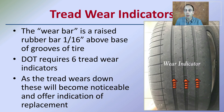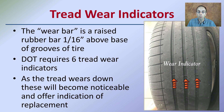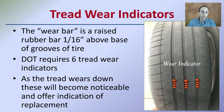We also have tread wear indicators. If you look at this tire, you may not see them initially, but I've highlighted them here with little arrows. They are little wear bars — a rubber bar raised about 1/16th of an inch above the base of the grooves. The DOT requires six tread wear indicators, so because there are only six, you may have to rotate the tire or look at a different portion to find one. As the tread wears down, these will become noticeable and offer an indication for replacement.